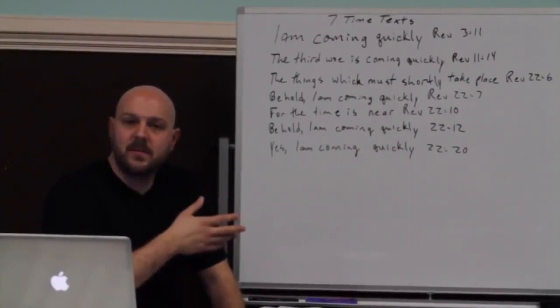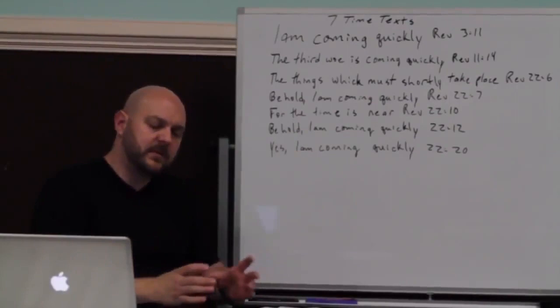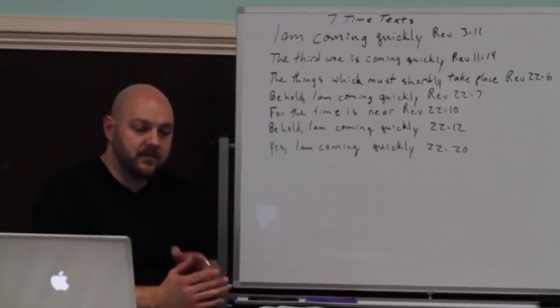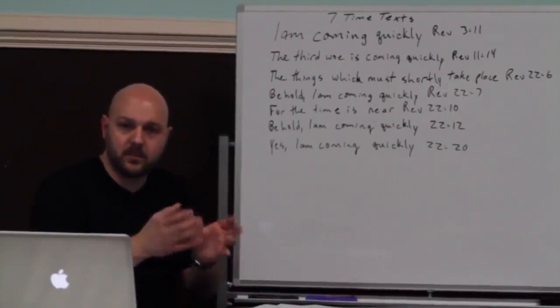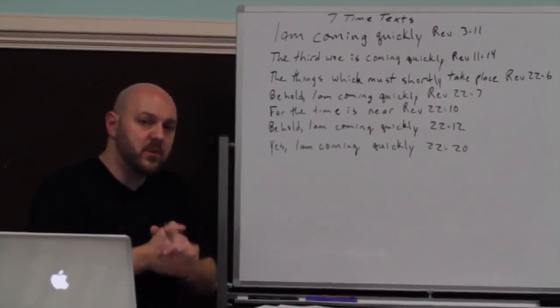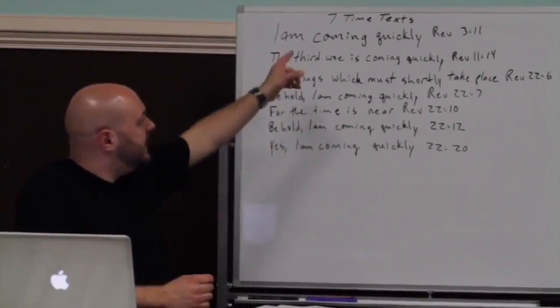This week we're going to talk about something called time texts. It's important when we see something in scripture that has a timing to it that we pay attention to this. Because whenever there's a prophecy, if the prophet is accurate and they are a true prophet of the Lord and they get it right, the timing should come to pass according to what the prophet says. Otherwise, the prophet should be called into question. This is important because when we get to the book of Revelation, as I have here on the board, we have seven time texts.